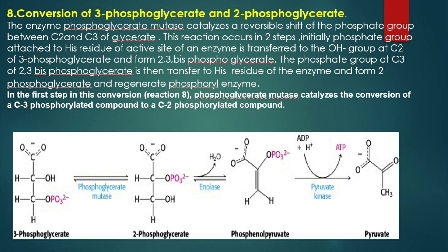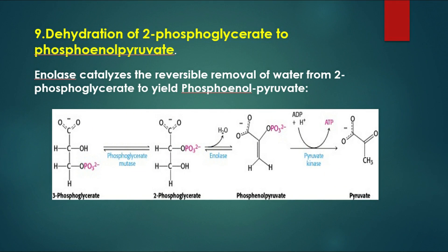In the eighth reaction, enzyme phosphoglycerate mutase catalyzes a reversible shift of the phosphate group between the second carbon and third carbon of the molecule, converting 3-phosphoglycerate into 2-phosphoglycerate. In the ninth reaction of glycolysis, dehydration of 2-phosphoglycerate to phosphoenolpyruvate occurs. In this reaction, enolase enzyme catalyzes the reversible removal of a water molecule from 2-phosphoglycerate to yield phosphoenolpyruvate.